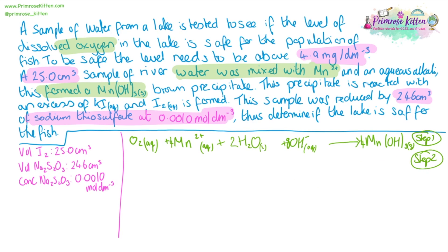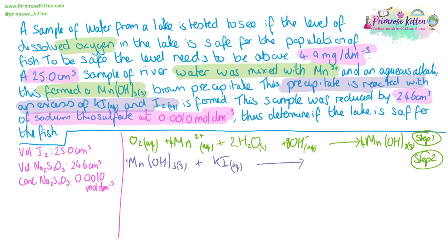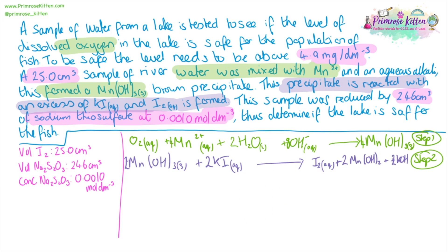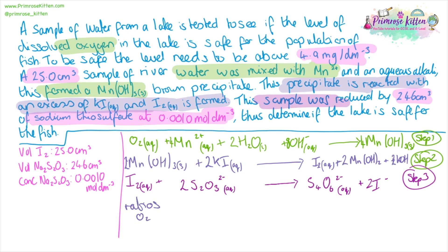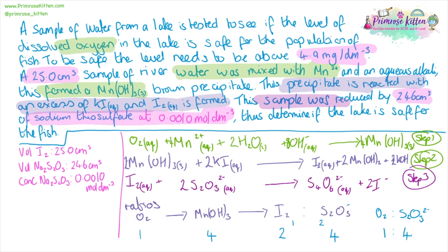I'm going to try and colour code this as much as possible, because there are quite a lot of equations involved. Our brown precipitate is reacted with an excess of potassium iodide, and the question tells us this is where we get our iodine from. Then our last equation is what is actually happening during the titration. The tricky bit is working out all of the ratios. So: one mole of oxygen gives four moles of manganese hydroxide, which gives two moles of iodine, which reacts with four moles of sodium thiosulfate. The ratio we're actually interested in is oxygen to thiosulfate — and that is a one-to-four ratio.